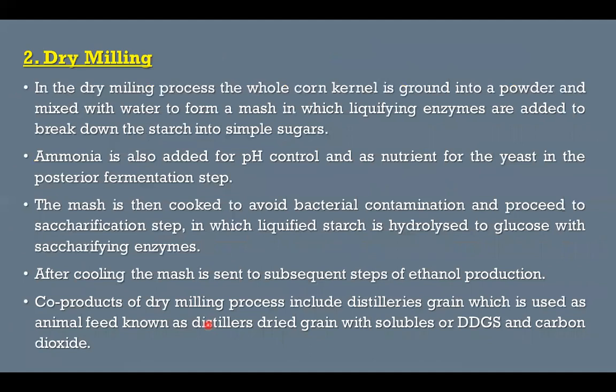Next is the dry milling process. In dry milling, the whole corn kernel is ground into a powder and mixed with water to form a mash, in which liquefying enzymes are added to break down the starch into simple sugars. To control the pH, ammonia is added and it also serves as a nutrient to the yeast. The mash is then cooked to avoid bacterial contamination, and it is processed to the saccharification step in which the liquefied starch is hydrolyzed to glucose with saccharifying enzymes. Then after cooling, this mash is sent to the subsequent steps of ethanol formation.